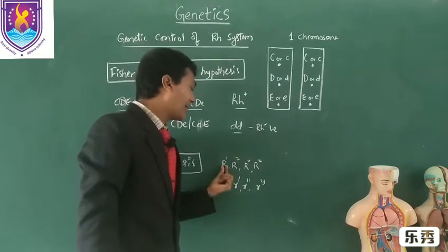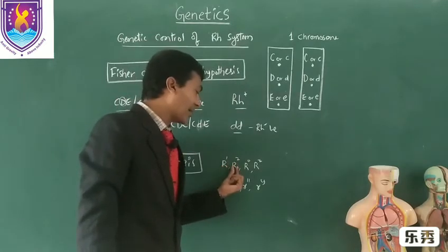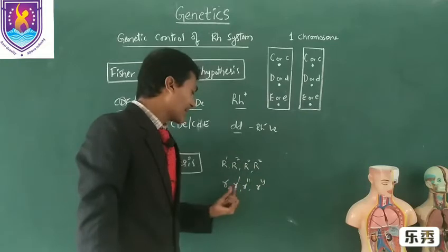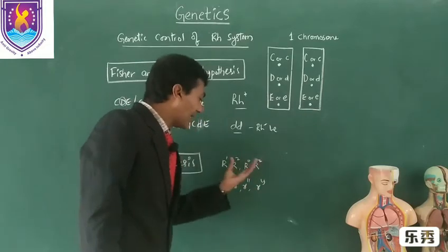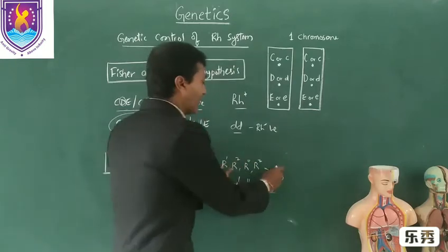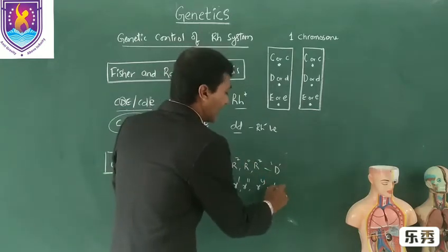These are capital R, R1, capital R2, R0, RZ, small r, small r1, r2, and rY. Among these eight alleles, the capital R variants are the dominant and the small r variants are the recessive.